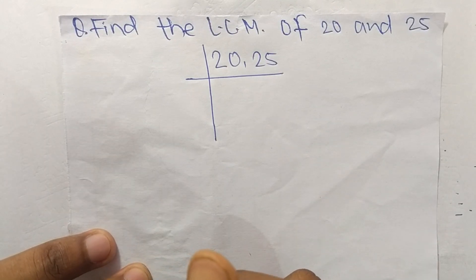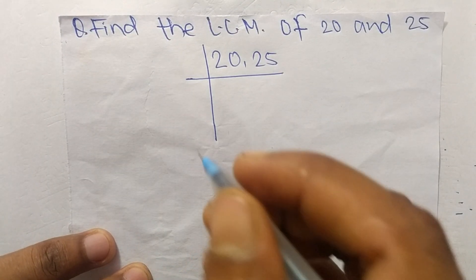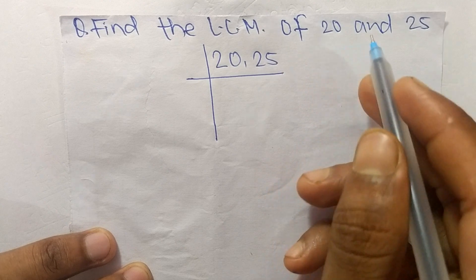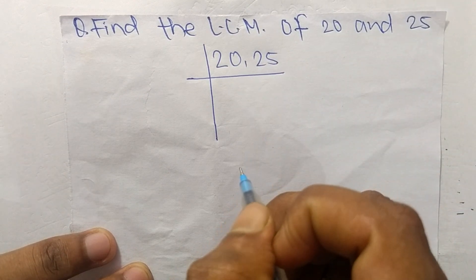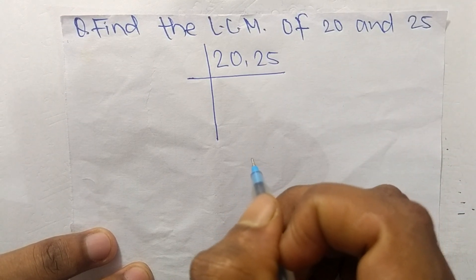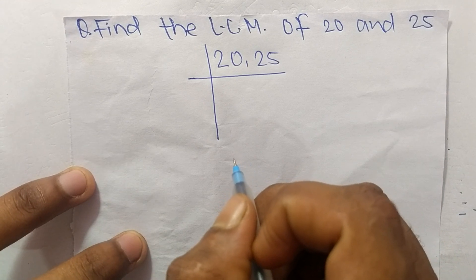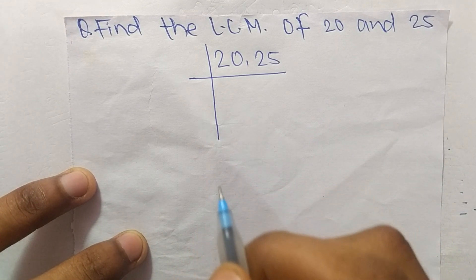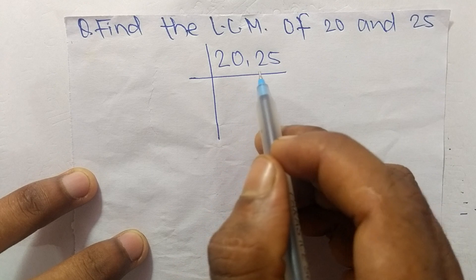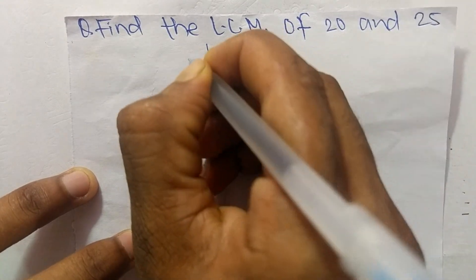Today in this video we shall learn to find the LCM of 20 and 25. To find the LCM, first we choose the lowest number that can exactly divide 20 and 25. The number is 5.